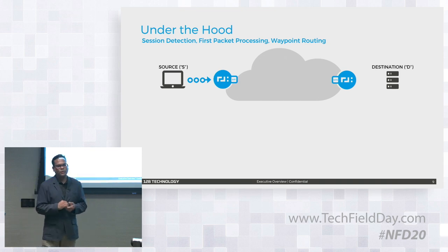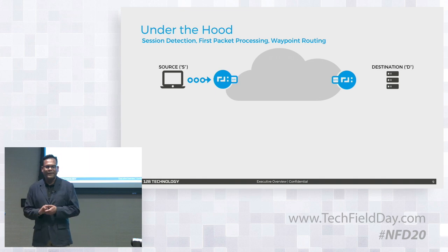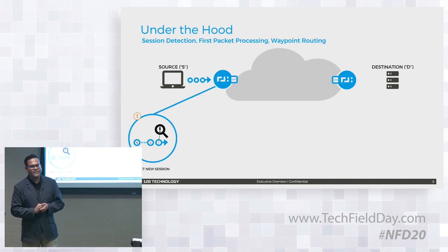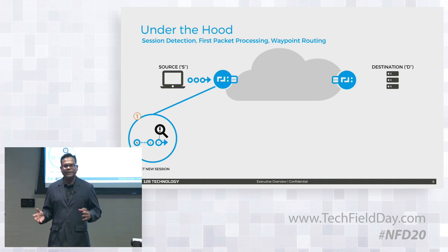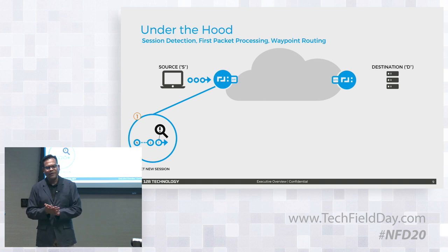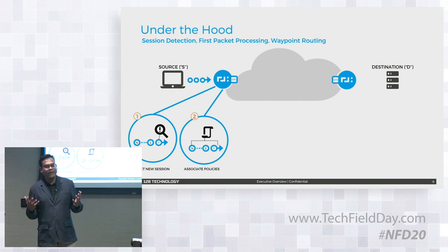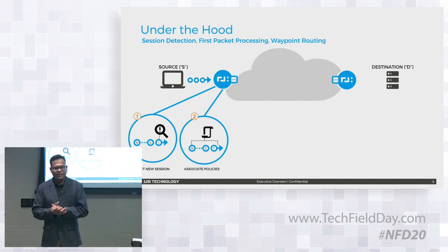Let's say you have a source and a destination, and you want to send packets between them. You have two of our routers on the path — the more you have, the better path control. When the first packet arrives, the router sees it's a new flow — brand new, never seen before. We check for a deny-by-default policy. If there's no service configured, we act like a firewall — we are a layer 2 to layer 4 firewall — and we drop those packets.